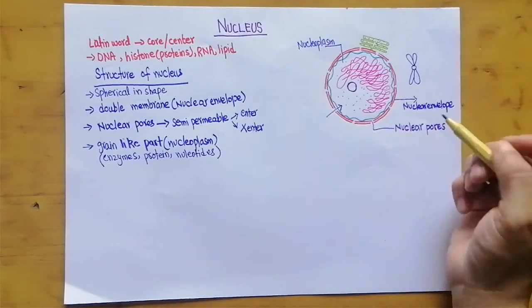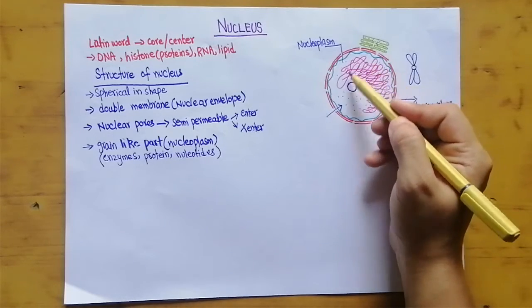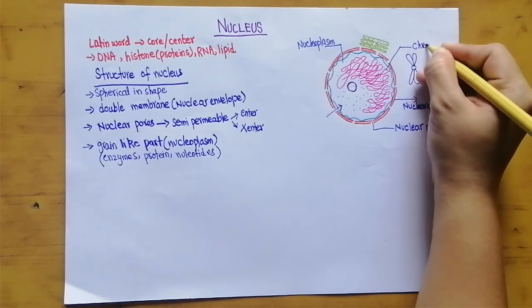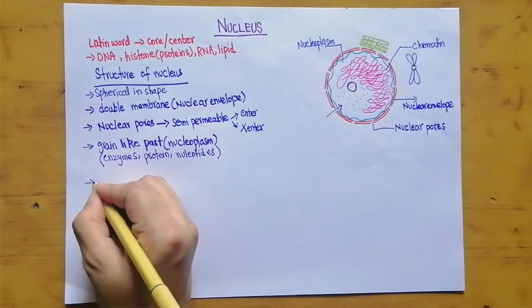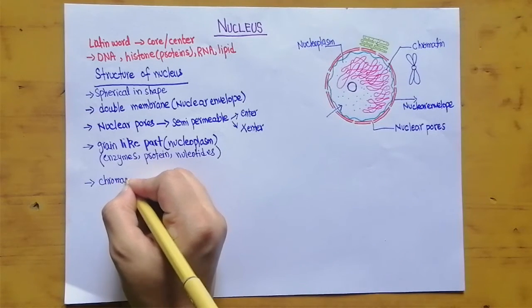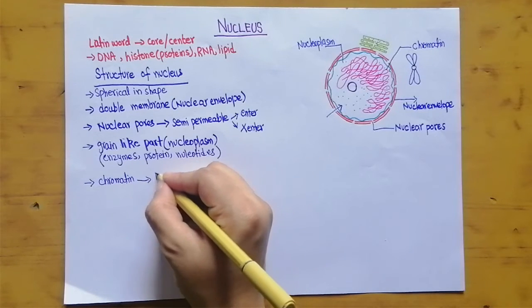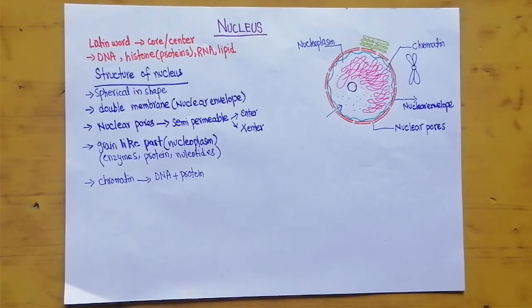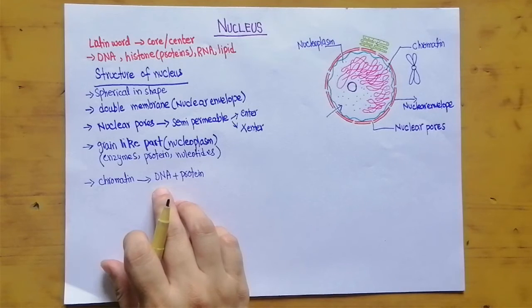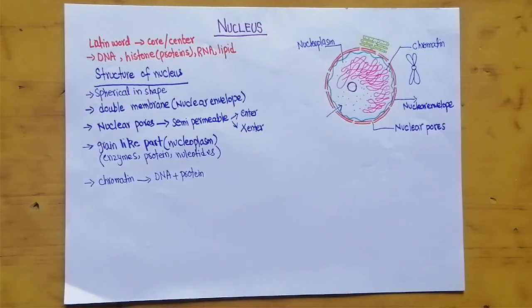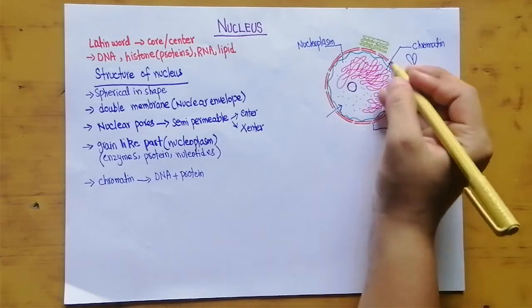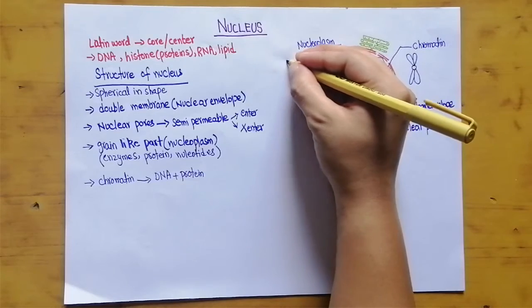Inside the nucleoplasm you can see a thread-like structure known as chromatin. Chromatin is made up of DNA plus protein. When the cell is not dividing, the chromatin is present in this thread-like form, but when the cell is going to divide, this thread-like structure condenses and forms chromosomes.